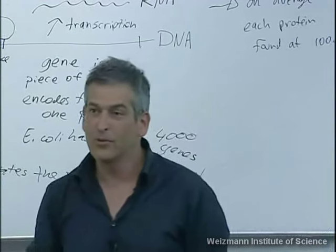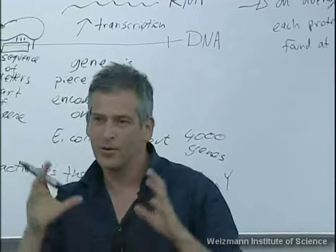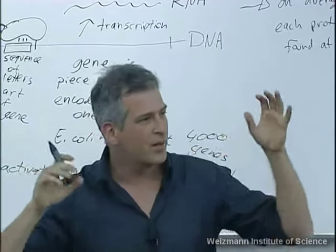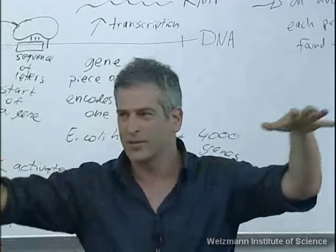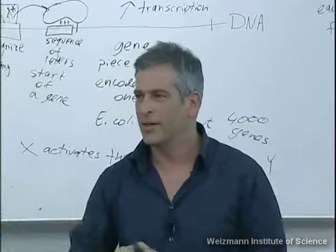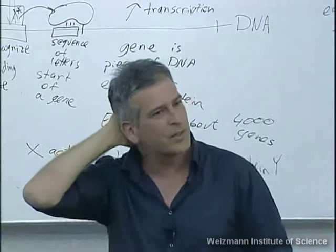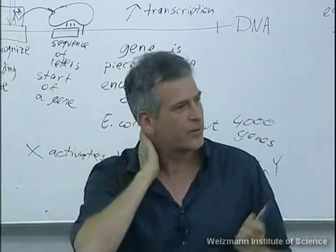Now Y itself, in some cases, is also a regulatory protein — a transcription factor — and it can activate Z. Z, if it's also a regulatory protein, can activate W and U, and so on. So you can get a whole network of interactions. And in fact, that's what you find inside E. coli: a whole series of events started by a signal, allowing you to make quite sophisticated computations.